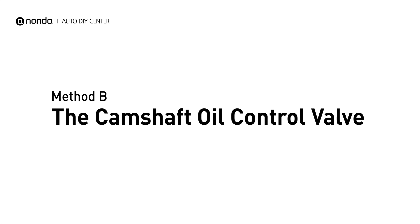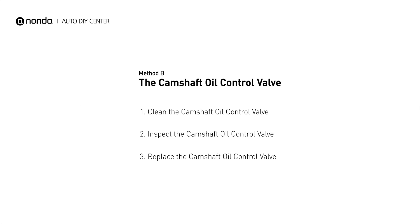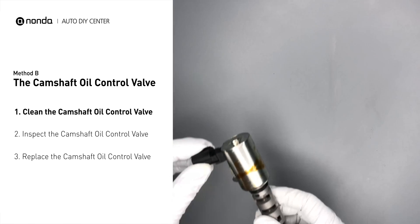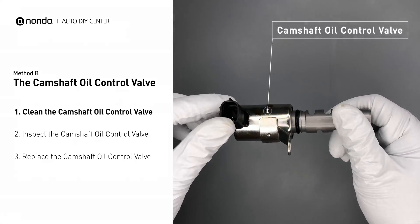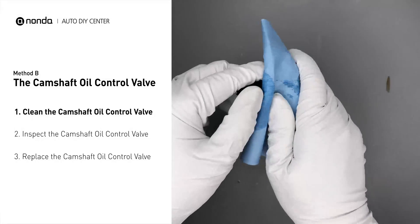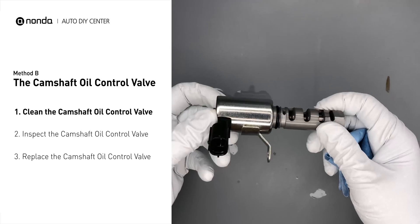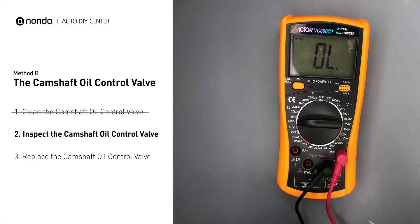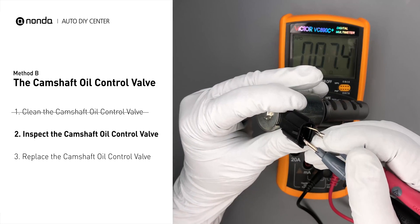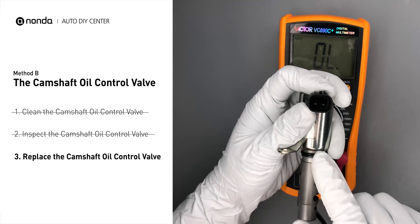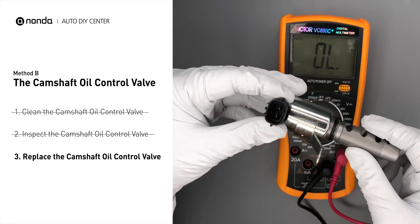Method B: the camshaft oil control valve. The camshaft oil control valves are usually located in cars that have engines with variable valve timing systems. First, carefully remove the camshaft oil control valve from the engine. Use a valve cleaner to clean the camshaft oil control valve. Then use a multimeter to perform a test on the camshaft oil control valve. At an ambient temperature of 68 degrees Fahrenheit, the valve resistance should be between 6.9 ohms and 7.9 ohms. If you do not get a reading, this indicates that the camshaft oil control valve is faulty and needs to be replaced.